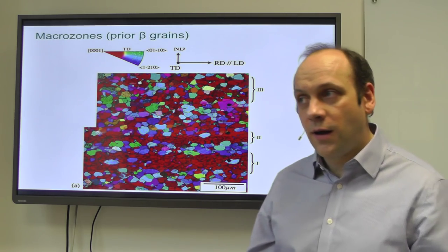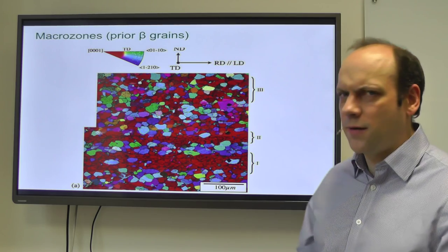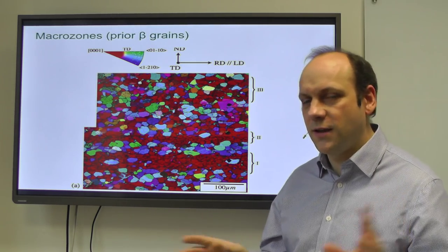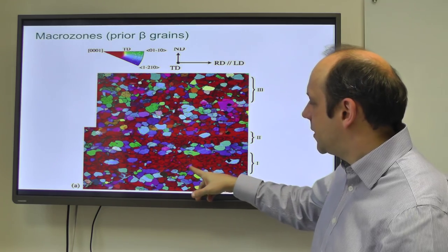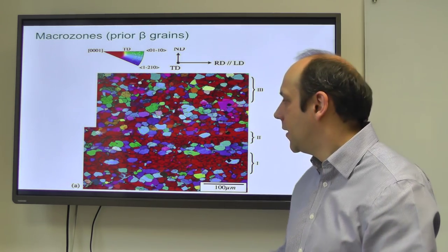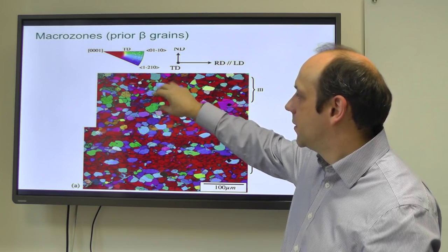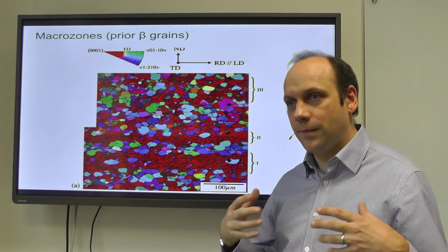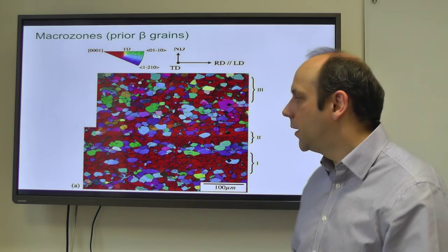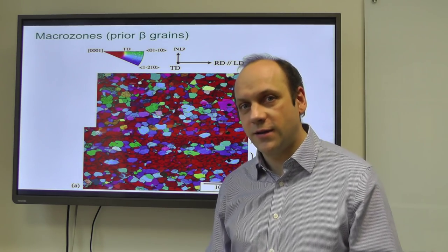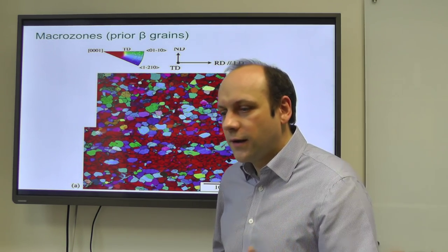These macrozone bands are thought to be a problem in terms of fatigue performance, as they allow dislocations to run across regions of common orientation. In high-cycle fatigue situations at high stress ratios, you can see these tend to facet - forming lots of planar facets on the fracture surface - and these tend to be a low-strength fracture mode. The precise mechanisms are still somewhat unclear as a matter of research.